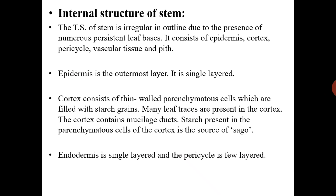Epidermis is the outer single layer made up of parenchymatous cells. Cortex consists of thin-walled parenchyma cells filled with starch grains, and many leaf traces are present in the cortex. The cortex also contains mucilage ducts. The starch present in the parenchymatous cells of the cortex is the source of sago — that is why Cycas is also called a sago plant, as it is an edible part.